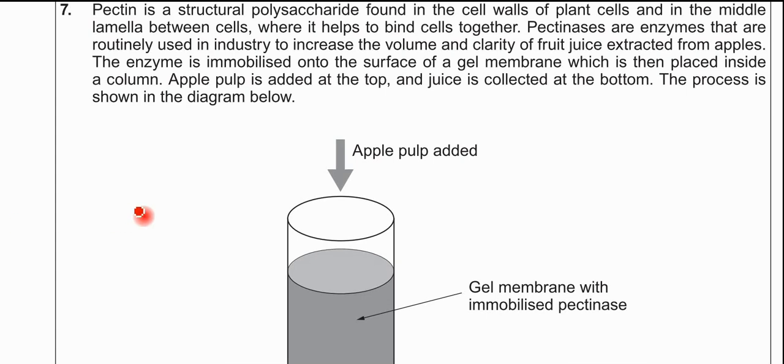This is question 7 from the June 2014 BY-1 paper. This question is all to do with immobilized enzymes, and the examiner is using the example of immobilized pectinase enzymes. Pectinases can digest this polysaccharide called pectin. The examiner tells you what this pectin does - it sort of binds cells together. It's used in industrial production of fruit juices, these pectinases.